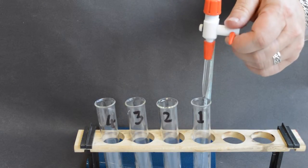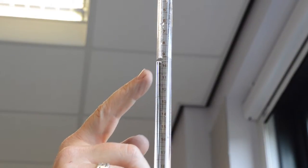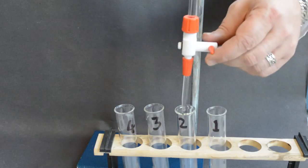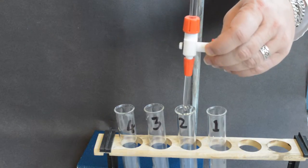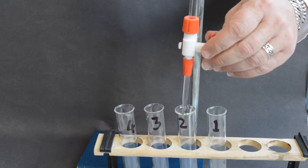Note the remaining volume in the burette before continuing. Repeat the process of adding distilled water to the tube labeled two. This tube requires eight milliliters of distilled water.